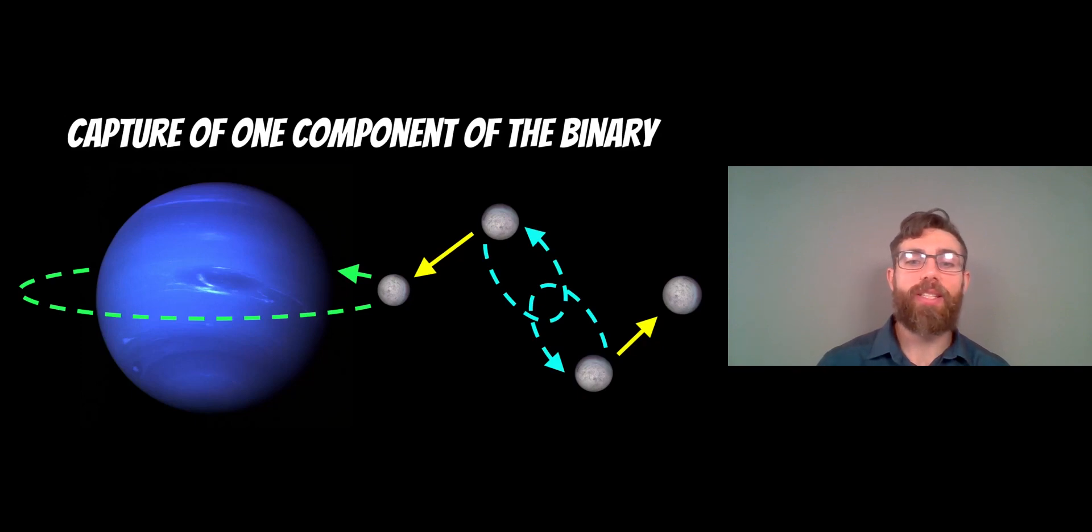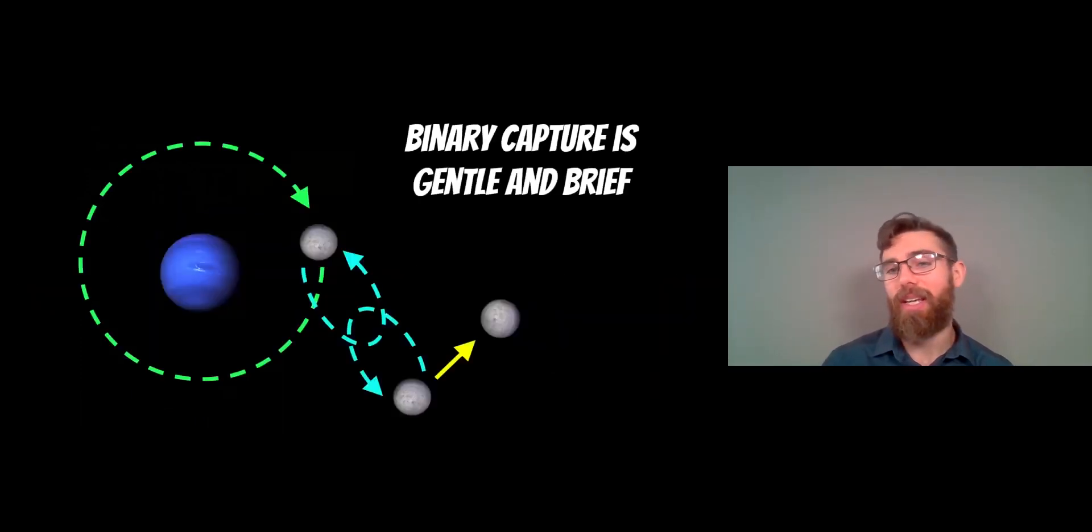And the reason why this is a more favoured scenario for the capture of Triton is it's quite gentle, and it happens relatively quickly. So it's a fairly brief and gentle process. They get close enough, relatively slow, and it's captured. So it's like a nice gentle swap onto a new orbit. And then the other one is ejected onto its own orbit, and it floats off and back into the Kuiper Belt or wherever it is now.